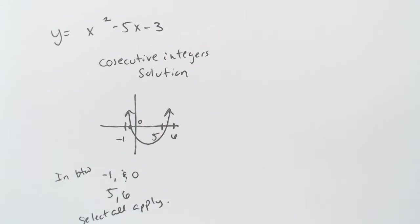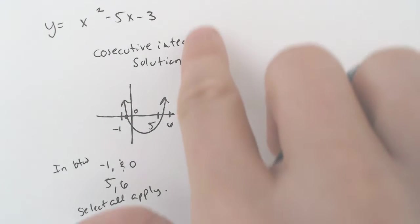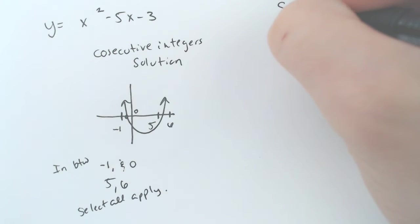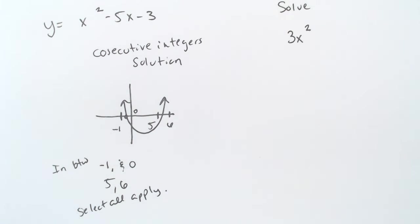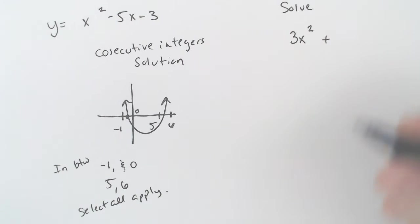Another question that you might be asked, instead of solving via graphing calculator, it may be required that you solve something like this. So let's say we had 3x squared plus 12 equals 0.